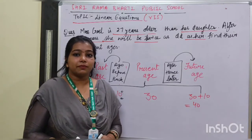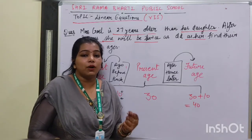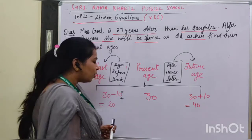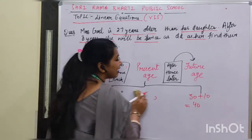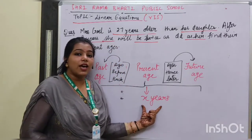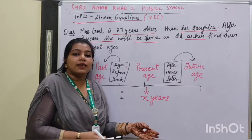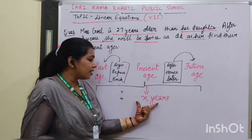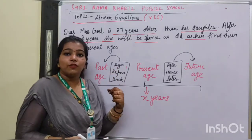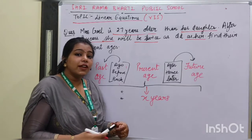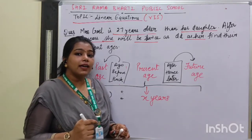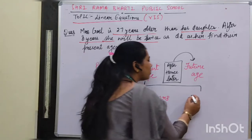But suppose you do not know my age — you have no idea about it. Then what will you do? We will let my age as x years. The same way you did with numerals, we will do with variables. If you want to find my past age, you will subtract. If you want to find my future age, you will add.